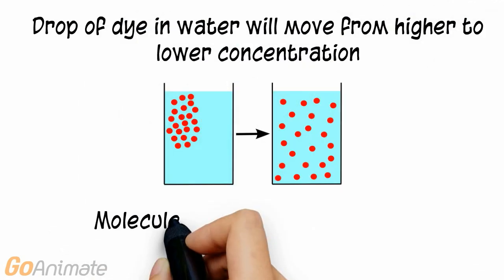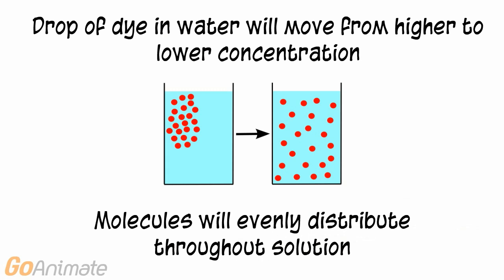Here is an example of diffusion. A drop of dye in water will move from where there is more dye, an area of higher concentration, to where there is less dye, an area of lower concentration. The molecules will eventually evenly distribute throughout the solution.